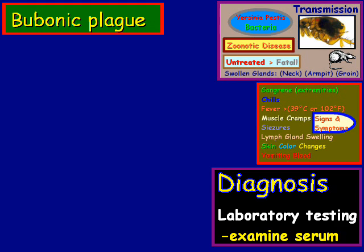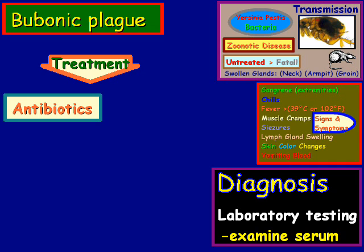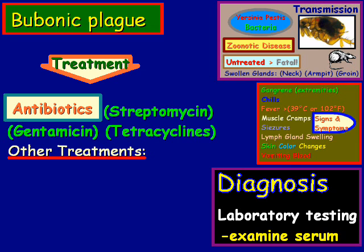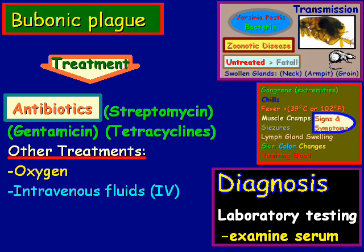Which leads us to treatment. How exactly do we treat this? There are antibiotics that have been known to be somewhat effective against this: streptomycin, gentamicin, and tetracyclines. Other treatments, probably used in conjunction with antibiotics, include oxygen, intravenous fluids (IV), and respiratory support.